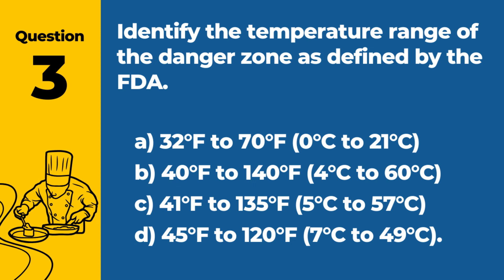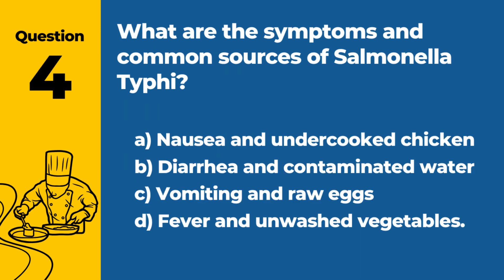Question 3: Identify the temperature range of the danger zone as defined by the FDA. a. 32°F to 70°F (0°C to 21°C). b. 40°F to 140°F (4°C to 60°C). c. 41°F to 135°F (5°C to 57°C). d. 45°F to 120°F (7°C to 49°C). Answer: c. 41°F to 135°F (5°C to 57°C). The FDA defines the danger zone as the temperature range between 41°F and 135°F, where bacterial growth in food is most rapid.